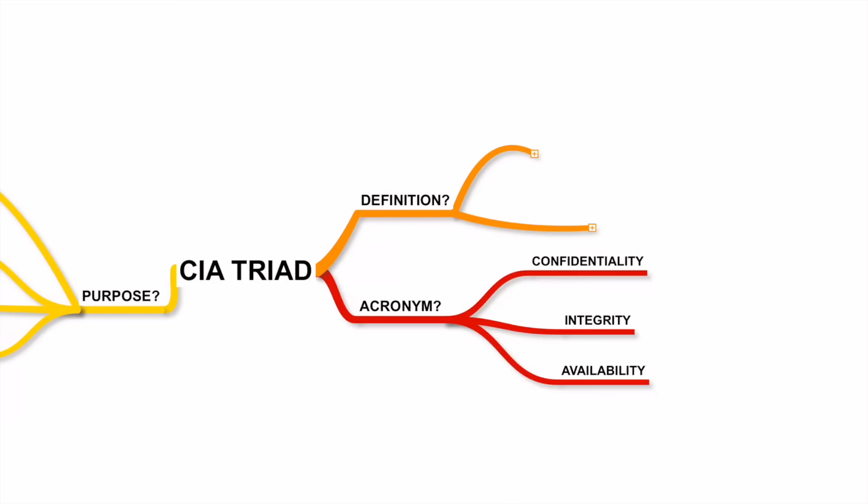In fact, I don't think any activity exists that does not touch one or more of these areas. Confidentiality guarantees that the access provided is as per authorization — the intent is to prevent unauthorized access and safeguard data. Integrity guarantees the reliability and accuracy of data.